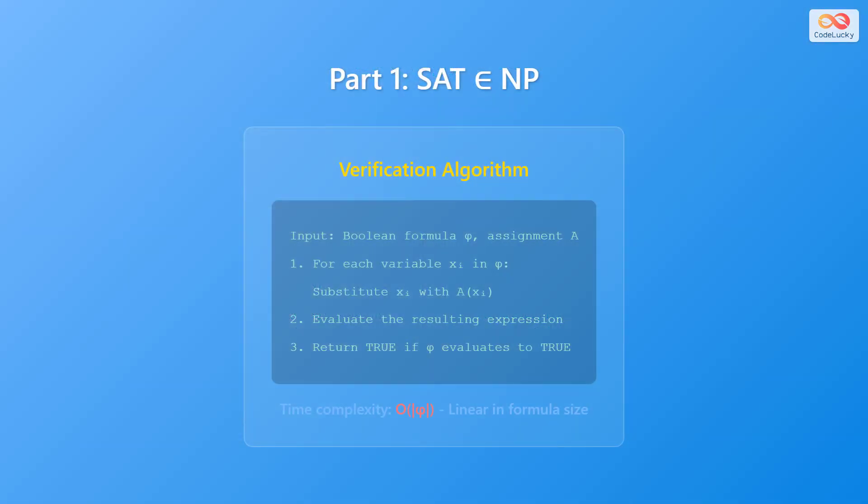Let's start by showing that SAT is in NP. This means we need to provide a verification algorithm that can check a proposed solution in polynomial time. Here's how such an algorithm might look: the input is a Boolean formula phi and an assignment a. For each variable xi in phi, substitute xi with a(xi). Then evaluate the resulting expression and return true if phi evaluates to true. The time complexity of this algorithm is O of the size of phi, meaning it is linear in the formula size. Thus, SAT is indeed in NP.